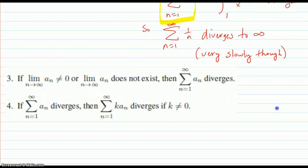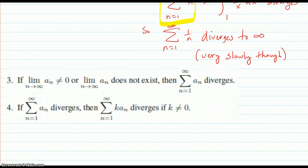Another property here is the limit of the an themselves has to converge. If it does not exist, then those sequence terms are flopping all over the place or they're blowing up. They're not going down to zero. So that series will diverge. The limit of the sequence terms themselves must exist for it to even have a chance of converging.